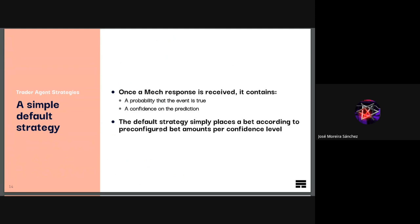A simple default strategy is to place a bet based on the confidence of the prediction that the MEC has returned. When the MEC returns a response for a prediction, it gives you the probability that the event is true and a confidence of the prediction — a value between zero and one, where zero is not confident and one is 100% confident. The default strategy simply consists of placing a bet according to the confidence level: if the MEC is very confident, you can afford the risk of placing a higher bet; if not as confident, you may decide not to bet on that market.